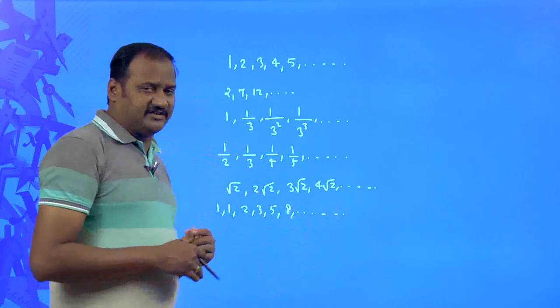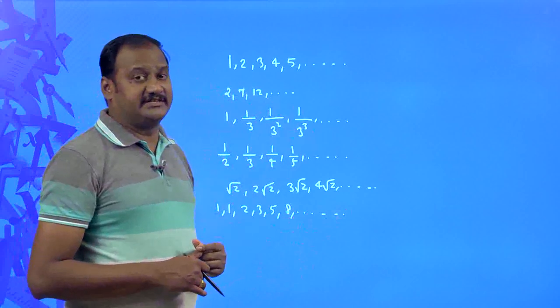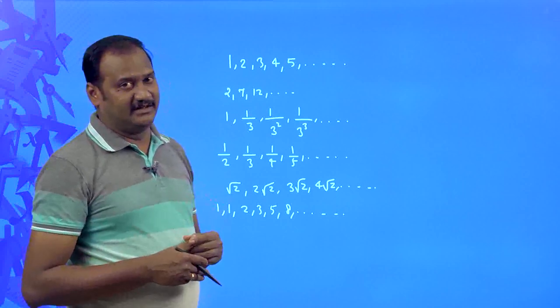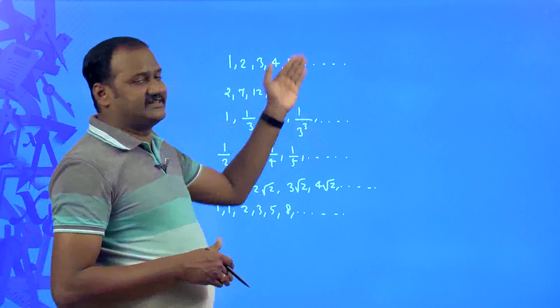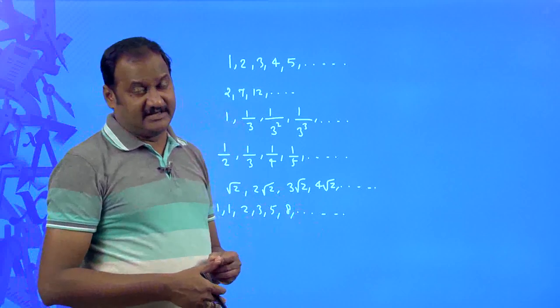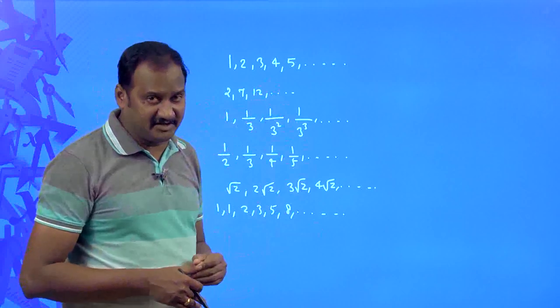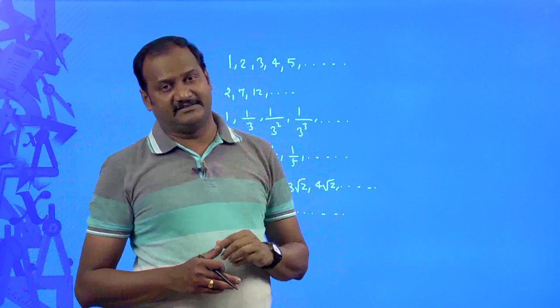In every single sequence, each term is followed by a particular pattern, a particular rule, a particular formula. If you can identify that particular formula, then you can say what is the next number in that sequence or what number comes after two more terms. These are all different kinds of sequences, and from these we are going to follow only four patterns — these four patterns are named as progressions.